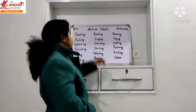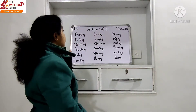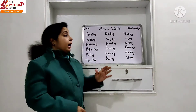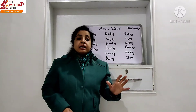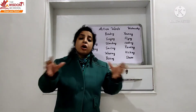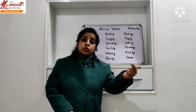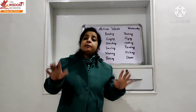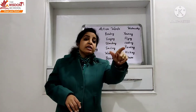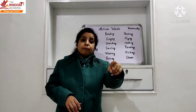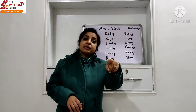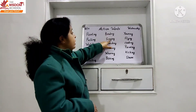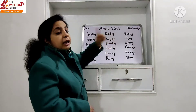Kids, look at the whiteboard. Action words. Our first action word is 'pointing.' Pointing — hum kaise karte hain: if there are many people in the area or many things, we point at what we need. Suppose there are many children and you don't know someone's name, so I will point at that person. So I am pointing. This is our action word: pointing.